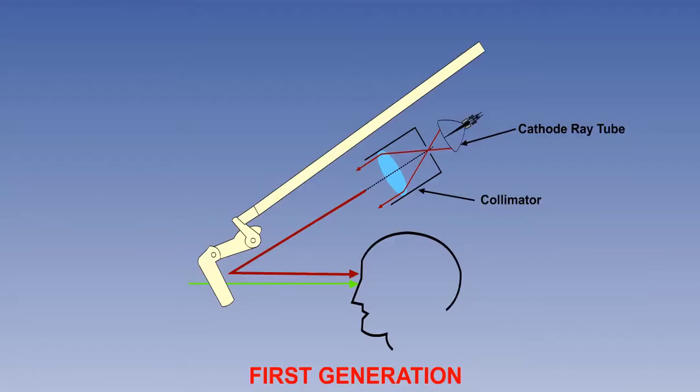There are currently four generations of HUD technology. The first uses a cathode ray tube to generate the symbology. This is the system still in use in most current HUDs. However, these systems are subject to fade and they require high voltages.